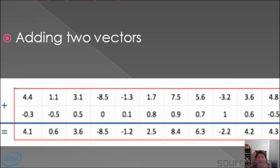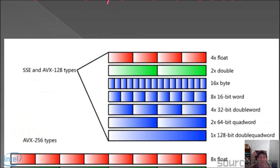This is the exact thing that vectorization is good at. What used to be a serial operation — for instance, it would add 4.4 to negative 0.3, then move on and add 1.1 to negative 0.5, and so forth, doing these operations one at a time — but now with SIMD, which stands for Single Instruction Multiple Data, it can actually add four of these at the same time, saving a ton of processing time.